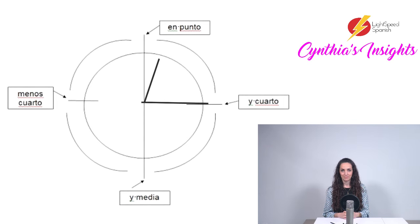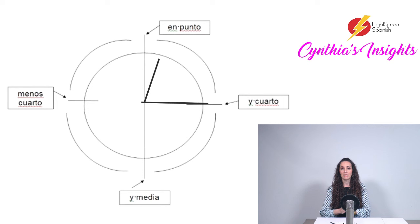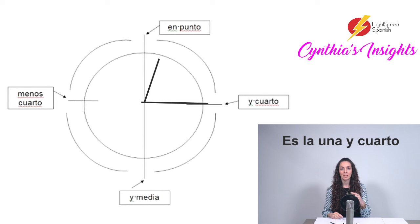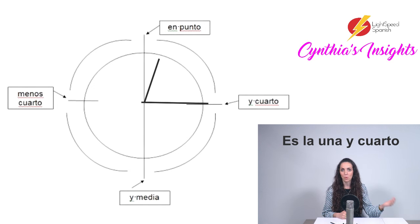Quarter past one. We said first the hour, then the minutes. In this case the hour is one — 'la una' — and it is singular. So instead of 'son las,' we say 'es la': Es la una y cuarto. It's 'one and a quarter.'